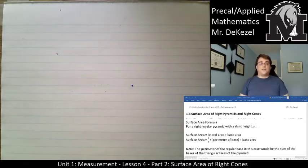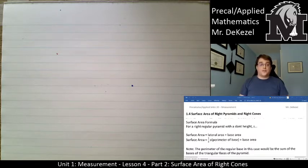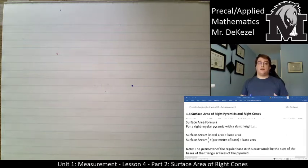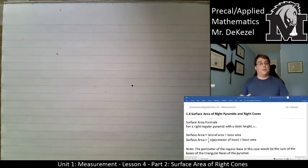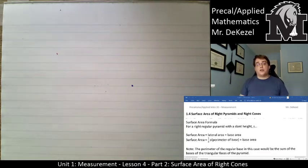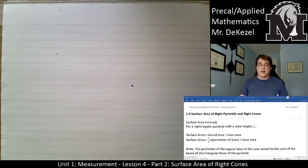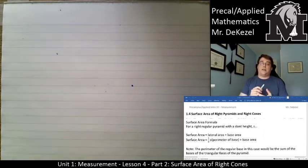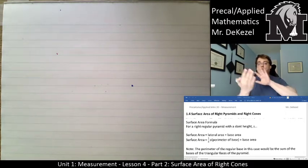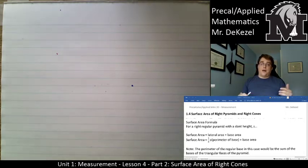Hello class, welcome back to part two of lesson four. This time we're going to be talking about surface area of right cones. The reason we did pyramids first is because we need to understand how to do a pyramid before we can do a cone. A little reminder: the surface area formula for a right regular pyramid with a slant height s is the lateral area — the outside area, the different sides — plus the base area.